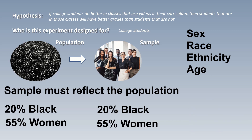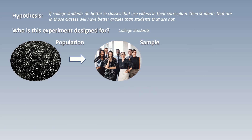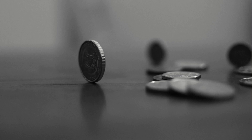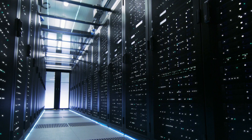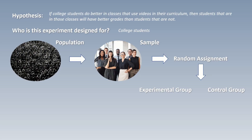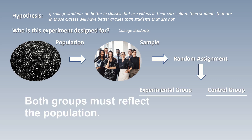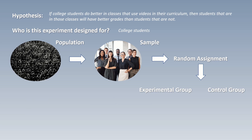Once I have my participants and know that they properly reflect my population, I'm going to break them up into different groups. This has to be done through a process called random assignment, which means you can't decide for yourself who goes into one group or the other — it must be left to chance. In the past, this could be done through something as simple as flipping a coin; today it's usually done through computer programs. Using random assignment, you divide your sample into either a control group or an experimental group. Just like the sample needs to reflect the population, each of these groups also needs to reflect that population, and there can be no differences between them.